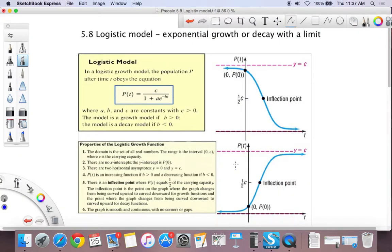Okay, 5.8 logistic model, exponential growth or decay with limits. So we've seen some exponential functions now, they've all been uninhibited, which doesn't make a lot of sense if you think about it a little bit. So there's another model that we could use, it's called a logistic model.